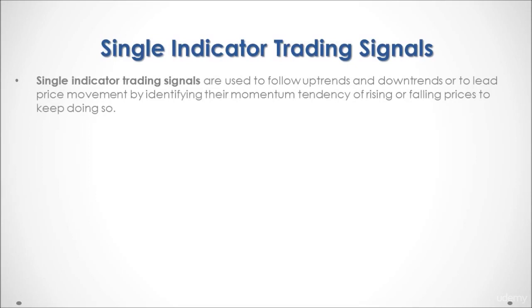Single indicator trading signals are used to follow uptrends and downtrends, or to lead price movement by identifying their momentum — the tendency of rising or falling prices to keep on doing so.